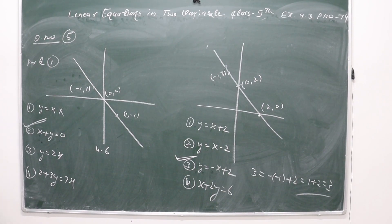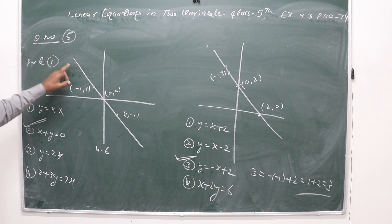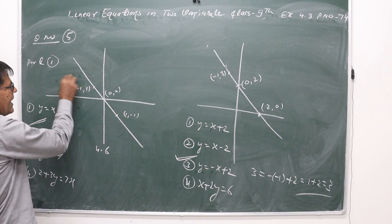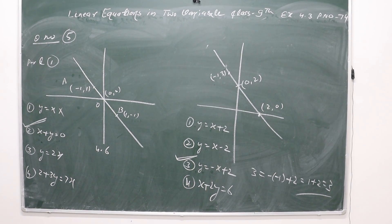Good morning students. Class 9th, Linear Equation in 2 Variables, Exercise 4.3, question number 5. In the last video we discussed this at the end, but I am repeating this question again. In part 1, a graphical representation is given and on this graph there are three points: first is A, second is O, and third is B. We have been given four options and we have to check which equation represents this graphical representation.